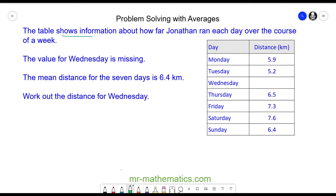Hello. The table shows information about how far Jonathan ran each day over the course of a week. The value for Wednesday is missing. However, the mean distance for the seven days is 6.4 kilometers. Work out the distance for Wednesday.